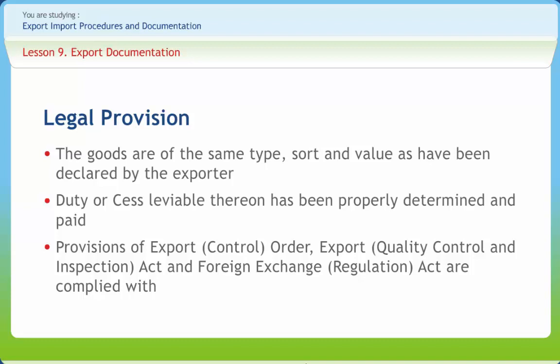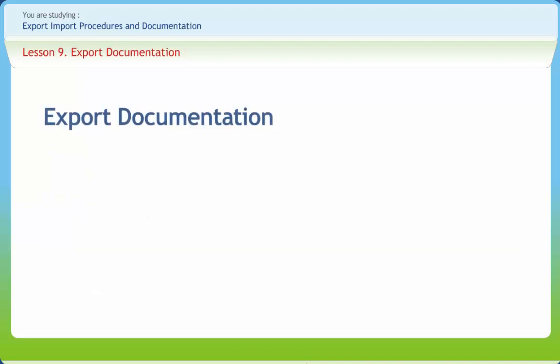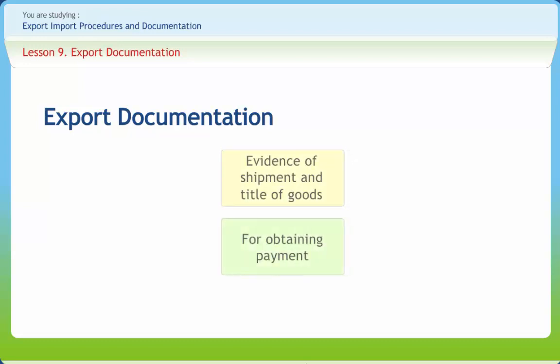The Customs Act section 50 further states that the exporter, in case of goods to be exported in a vessel or aircraft, has to present the shipment bill and other connected documents to the proper officer. Once the goods are ready, an exporter has to prepare and execute various documents at different stages of sending the shipment of goods to the importer. These documents are important as evidence of shipment and title of goods for obtaining payment.